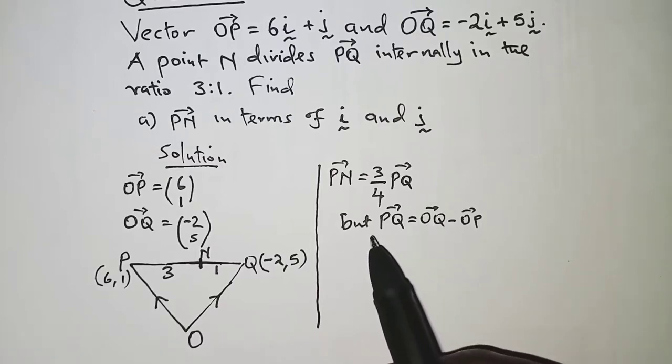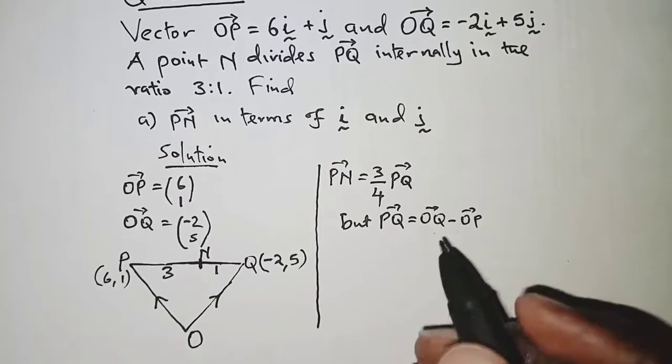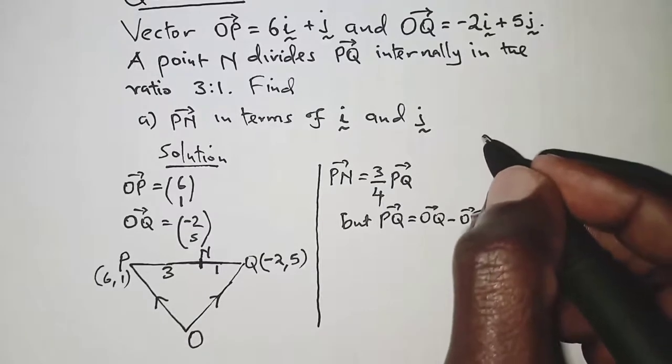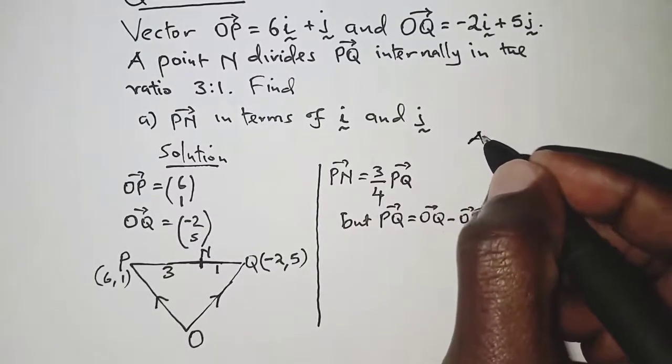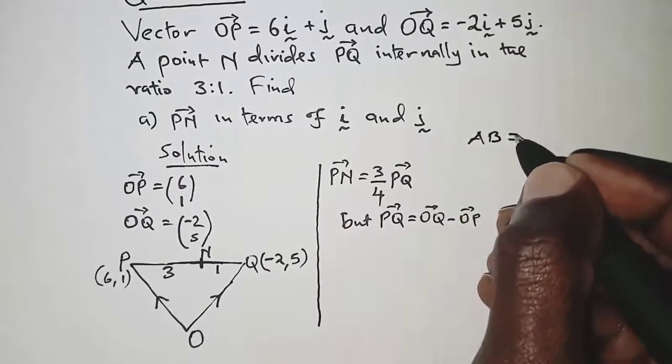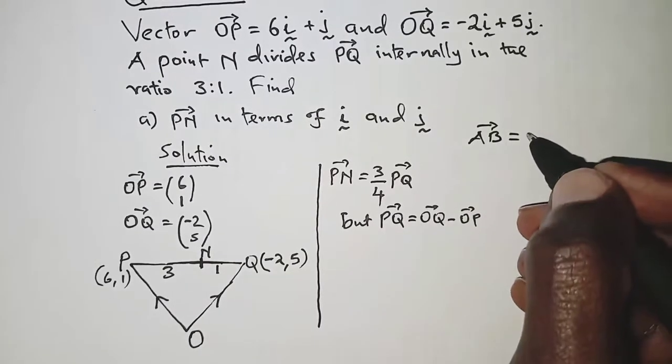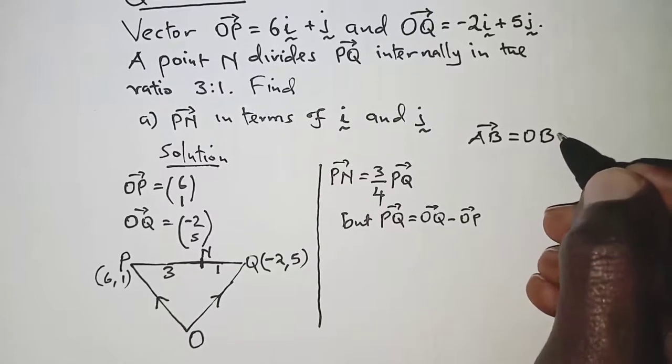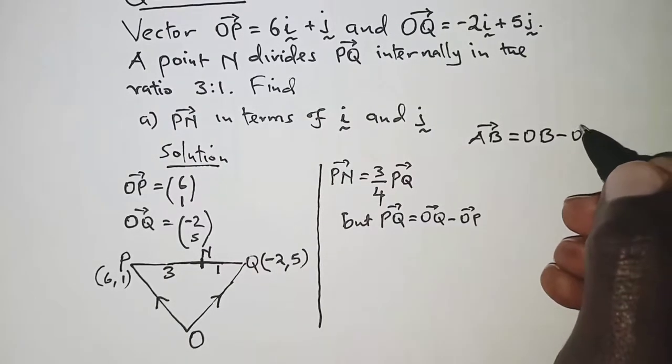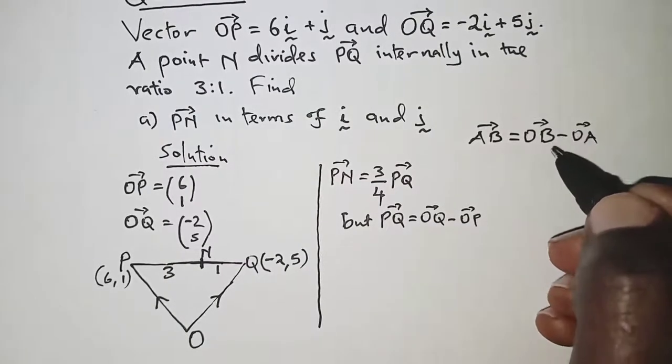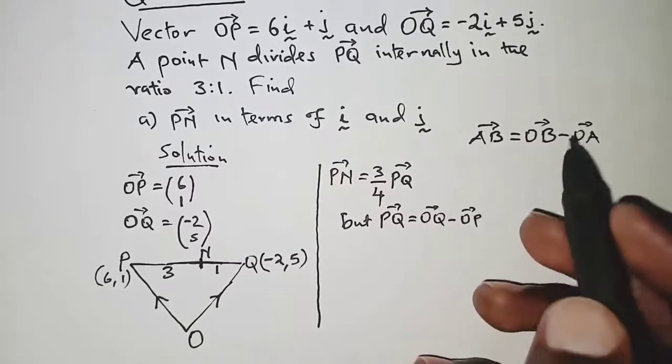So every time you're given, let's say we're given AB, vector AB can just be obtained directly as OB minus OA. Okay, so this will take care of everything.